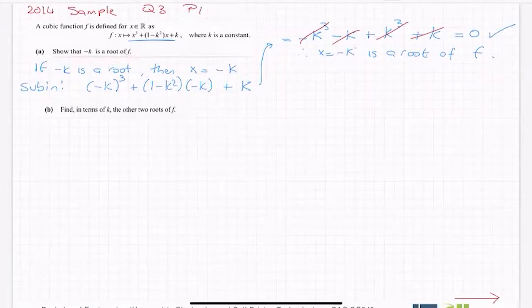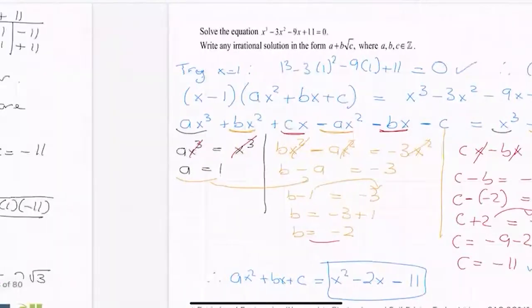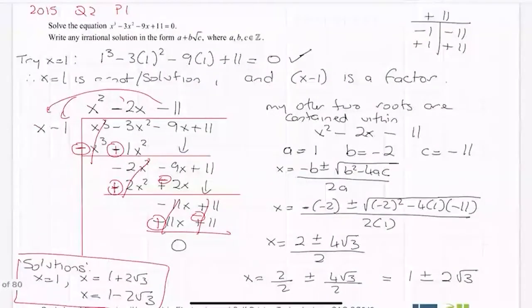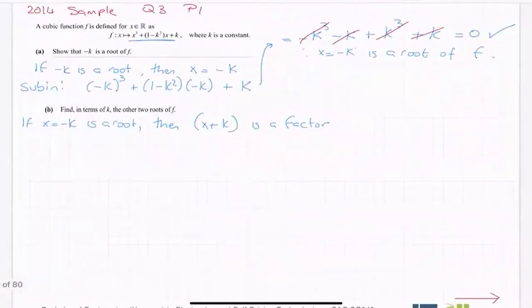Find in terms of k the other two roots of f. So just like any other cubic question, I will write down if x is equal to minus k is a root, then x plus k is a factor. And just like the one we did in 2015, you can do long division, or you can equate the coefficients. So let's try long division. And because that is how most people do cubics.